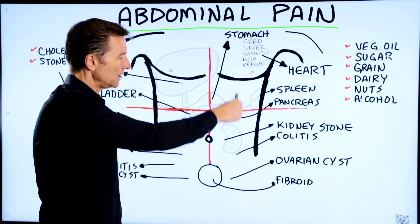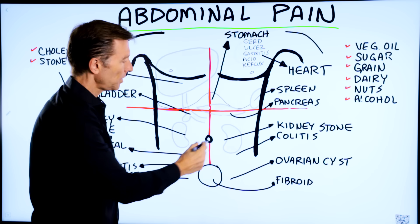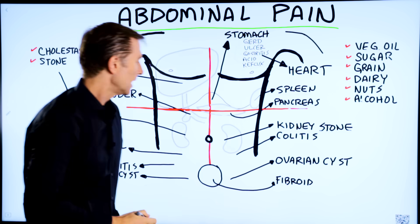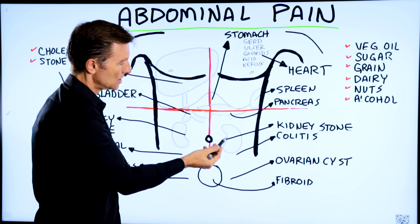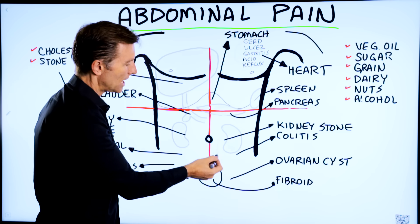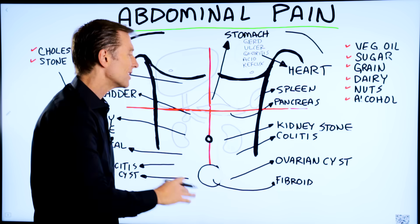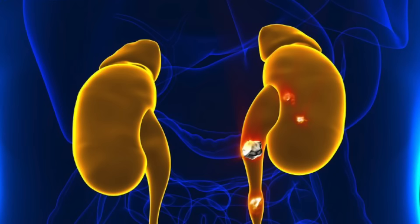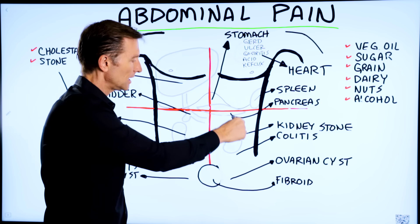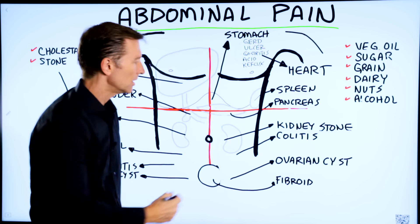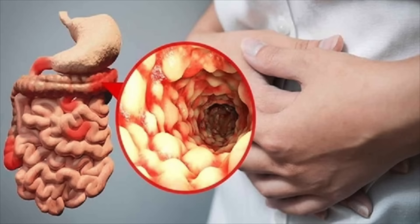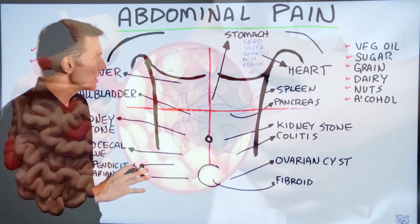Moving down to the left lower quadrant, if you have pain in this area it could be a kidney stone. If a kidney stone has dislodged into the ureters, you might have pain going all the way down lower. More likely though, you have some type of inflammation in your colon — your descending colon or even the small intestine. That could be colitis, diverticulitis, ulcerative colitis, or Crohn's disease.